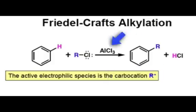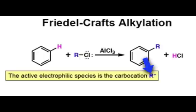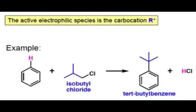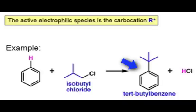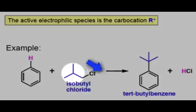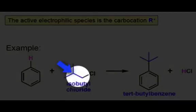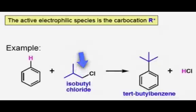Aluminum trichloride catalyzes this reaction by helping the chlorine dissociate from the carbon atom to generate an electrophilic carbocation species. The carbocation that is generated is a strong enough electrophile to react with aromatic rings. In this example, benzene can react with isobutyl chloride to produce tert-butylbenzene in an electrophilic aromatic substitution mechanism. However, you should quickly notice that in this reaction, it is the central carbon that gets attached to the ring and not the carbon that's attached to the chlorine.